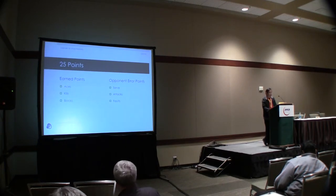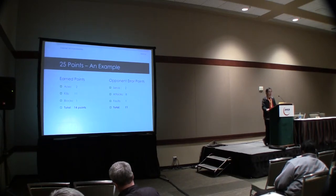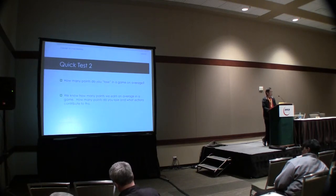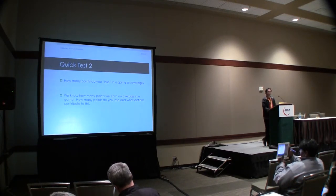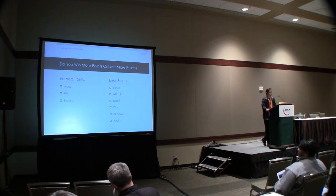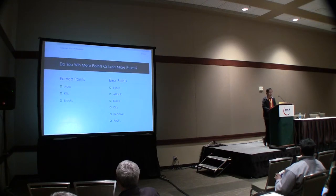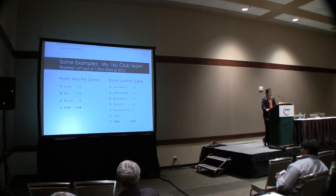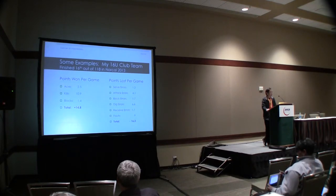Here's a typical example from my team last year: 14 points you earned, and the remaining 11 were given to you by the other side. That's how close the balance is between you and them. Now, the next question is how many points do you lose per set? Here's the other side: the error points for you — serves, attacks, blocks, digs, receives, and falls. My 16s team last year had 14.8 points won per set and minus 16.3 points lost.